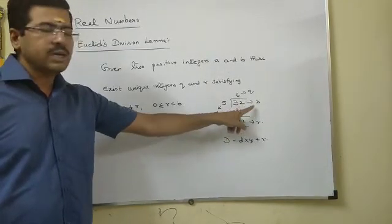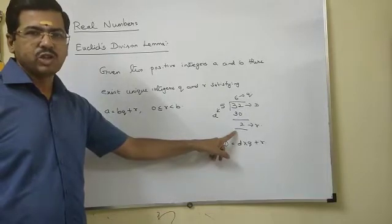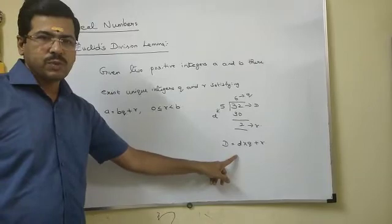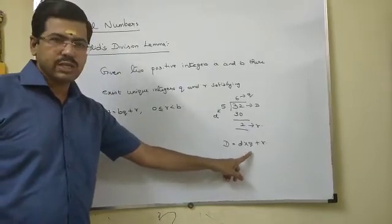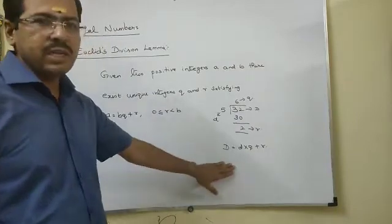Here, 32 is called dividend, 5 is divisor, 6 is quotient and remainder is 2. So, how can you check this? Dividend equal to divisor into quotient plus remainder. This is what you have studied in your lower classes.